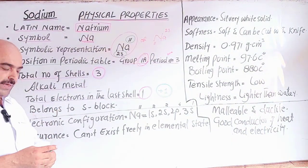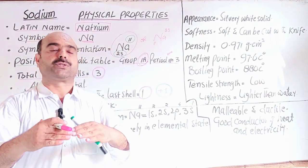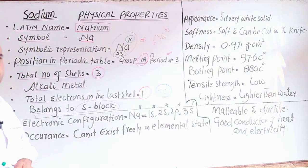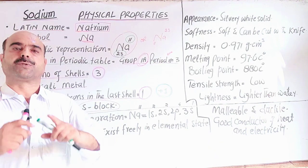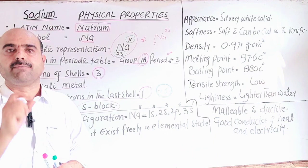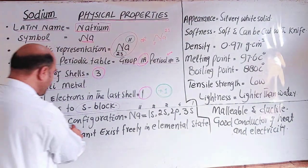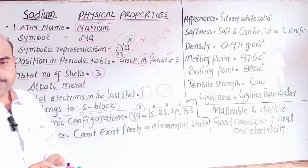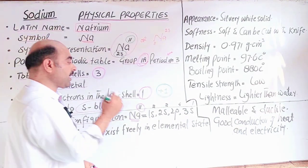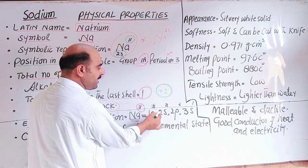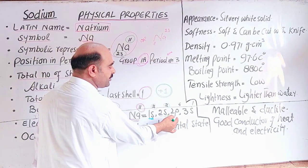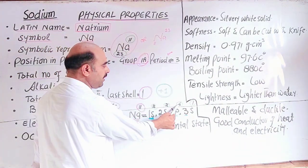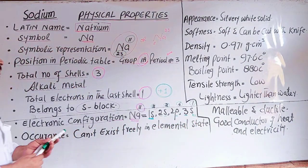During electronic configuration, the last electron enters the s sub-shell, so it is an s-block element. Elements are divided into blocks: s-block, p-block, d-block, and f-block elements. The sodium has atomic number 11, so 11 electrons arranged around the nucleus in sub-shells on the basis of increasing order of energy. The first shell has 2 electrons, second shell p sub-shell has 6 electrons, and third shell s sub-shell has 1 electron. The last electron is in the s sub-shell, so it is an s-block element.